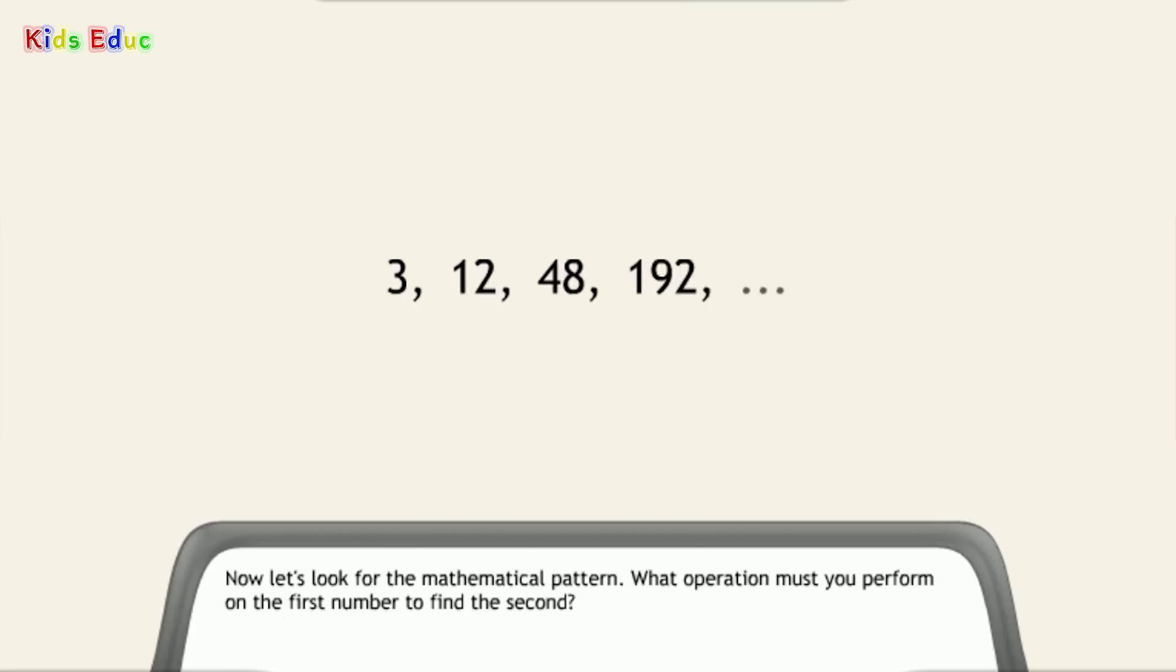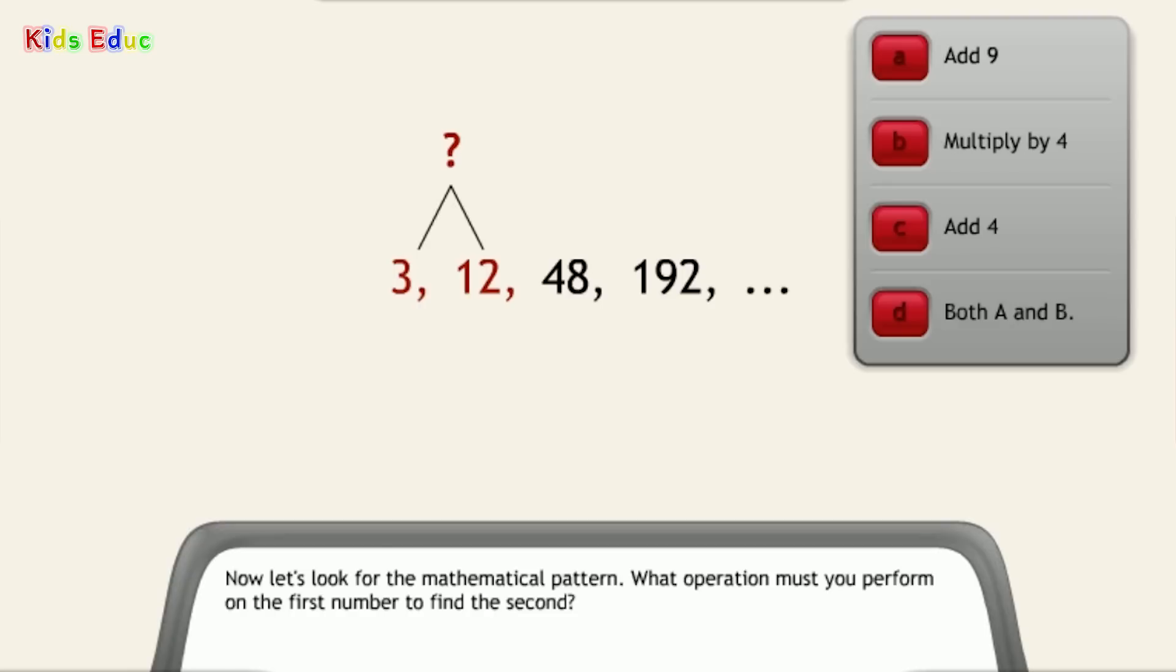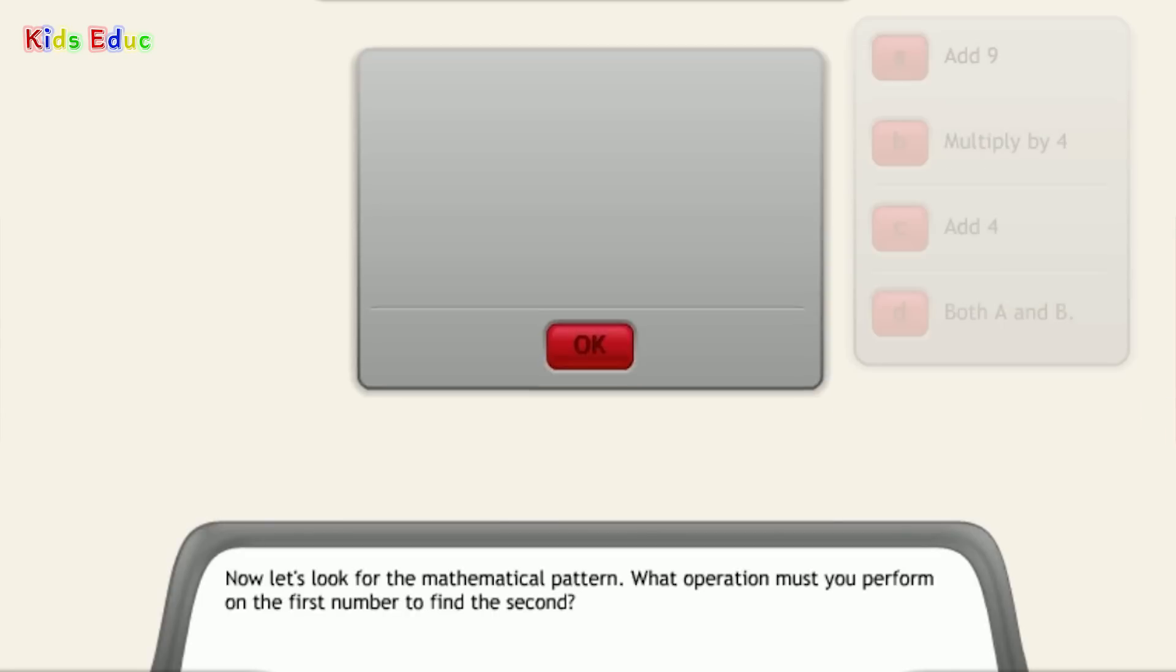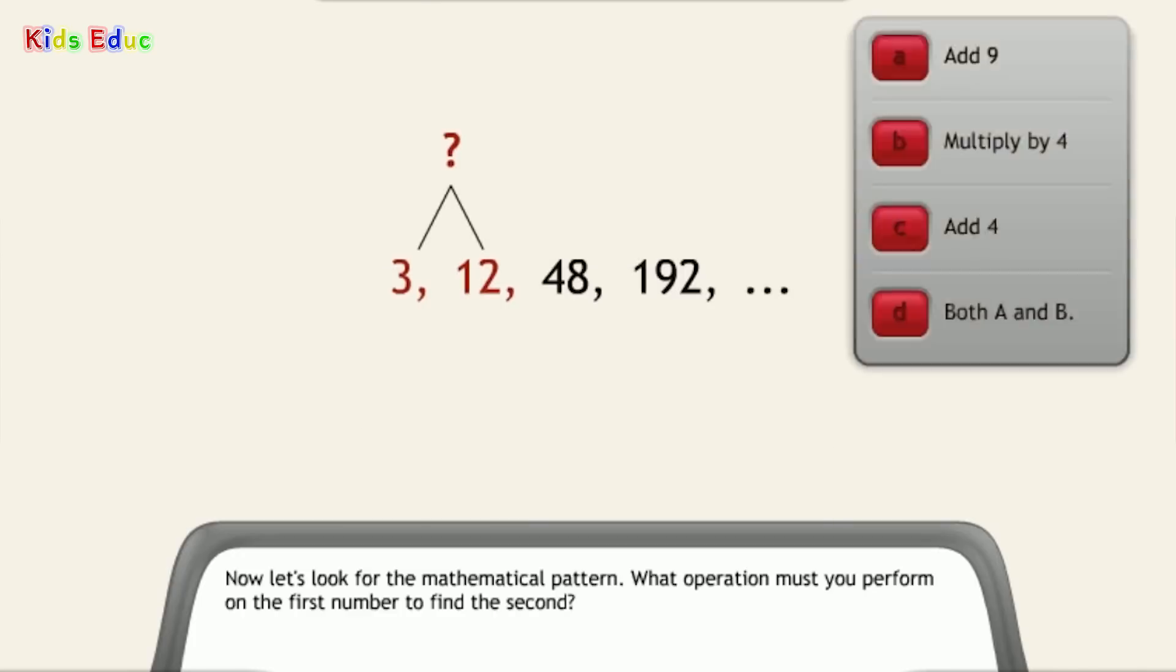Now let's look for the mathematical pattern. What operation must you perform on the first number to find the second? Both A and B. Very good. With two possible answers, our task is more difficult. However, we can test which option is the pattern by applying each of them to the rest of the sequence.